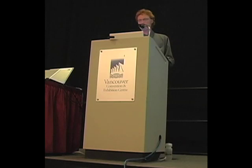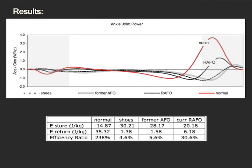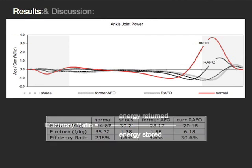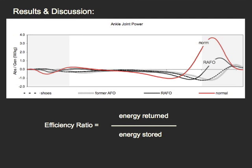But if we consider stance ankle joint power across all walking conditions of the patient, there was more energy storage — which is anything below the zero line, or negative area — and less energy returned, which is anything above the axis, than normal. However, in the AFO, because the amount of energy stored was closer to normal and the amount of energy returned was greater than in any of the other conditions, there is a margin of improvement in the efficiency ratio. The efficiency ratio is simply the amount of energy returned over the amount of energy absorbed in a given gait cycle, as proposed by Hafner in a review article in 2002.